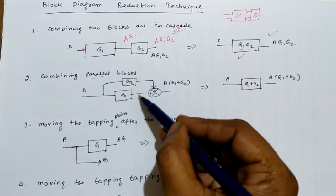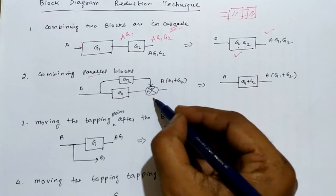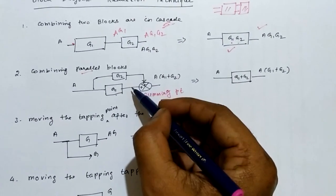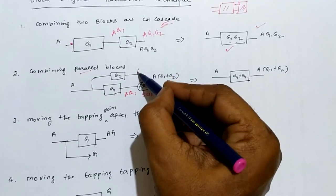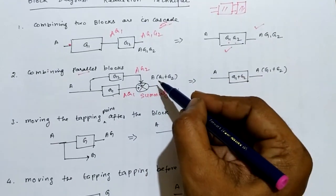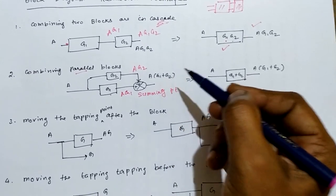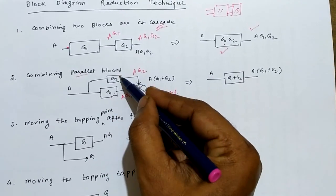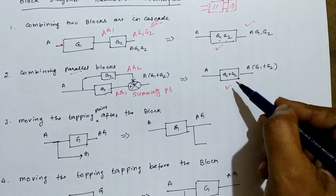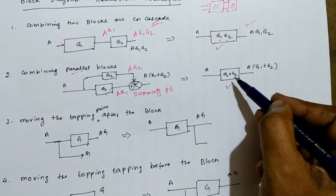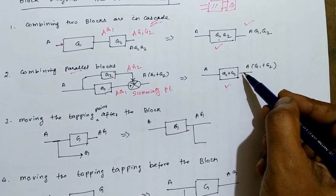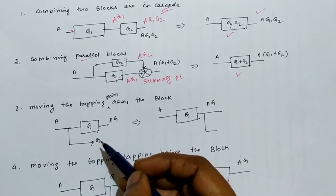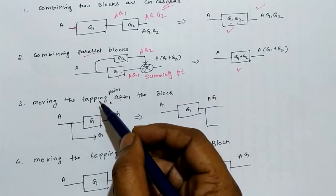Rule 2: combining parallel blocks. G1 and G2 are in parallel; the outputs of G1 and G2 go to a summing point. The output of the first block is A·G1 and the second is A·G2. Combined together we write A·G1 + A·G2, taking A outside gives A(G1 + G2). So the three components are combined into a single block having gain G1 + G2.